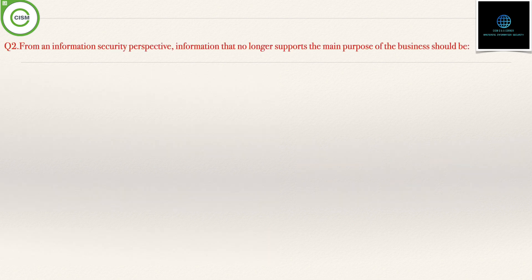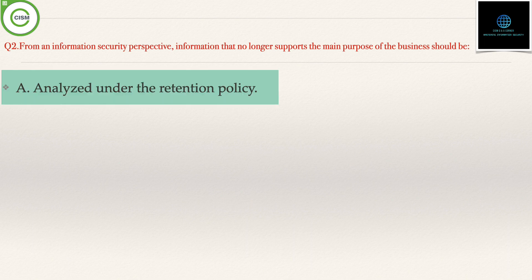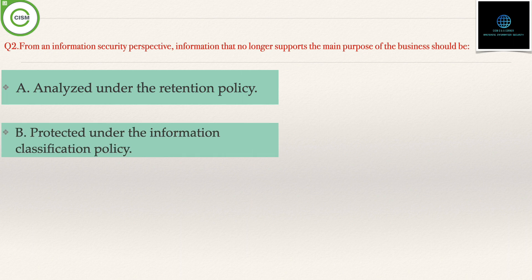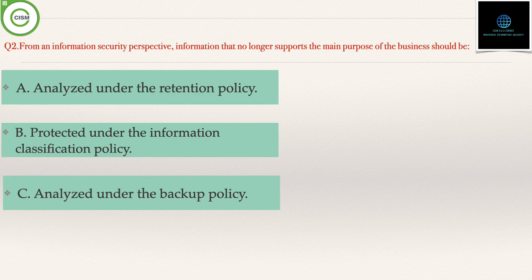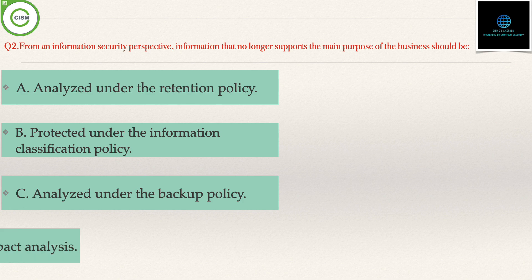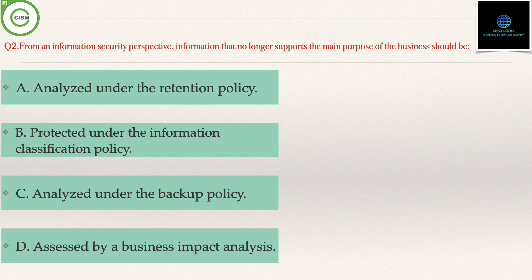Question 2 states: from an information security perspective, information that no longer supports the main purpose of the business should be — Option A, analyzed under the retention policy; Option B, protected under the information classification policy; Option C, analyzed under the backup policy; and Option D, assessed by the business impact analysis.